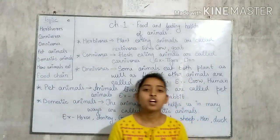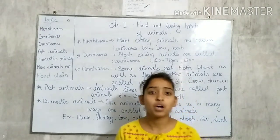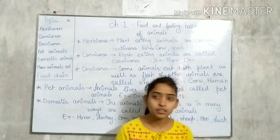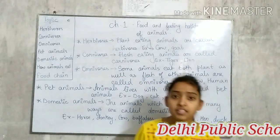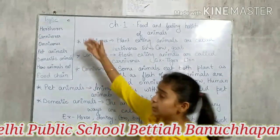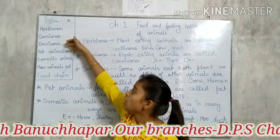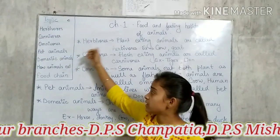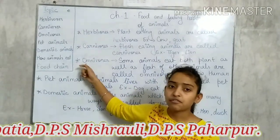Good morning students. Welcome to our YouTube channel of Delhi Public School Banusha Prabetiyam. Today I am Divya, standing here to teach you the first chapter of class 3 science. In this lecture we will cover the topics Herbivores, Carnivores, Omnivores, Pet Animals, Domestic Animals, How Animals Eat, and Food Chain.